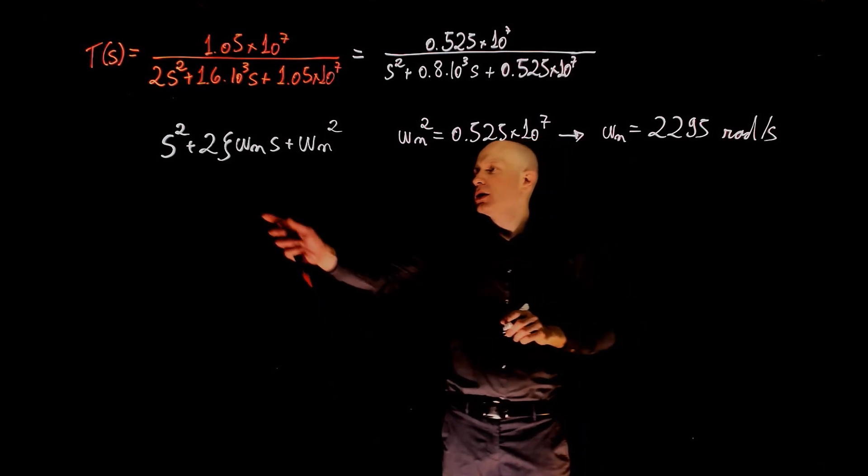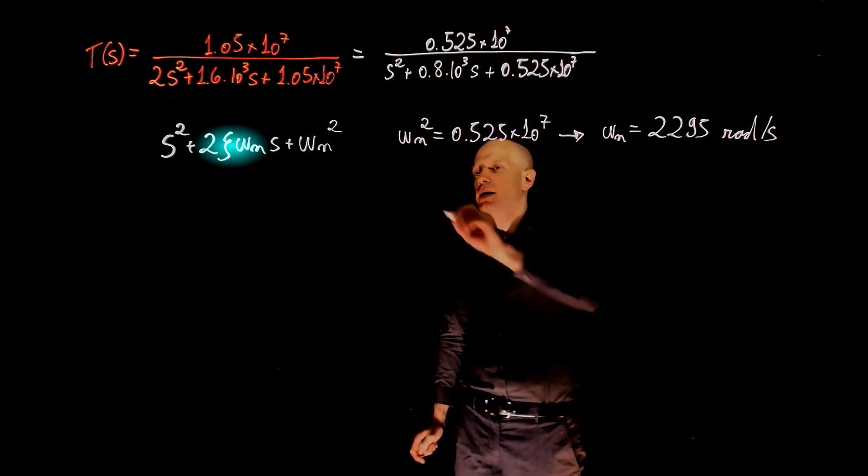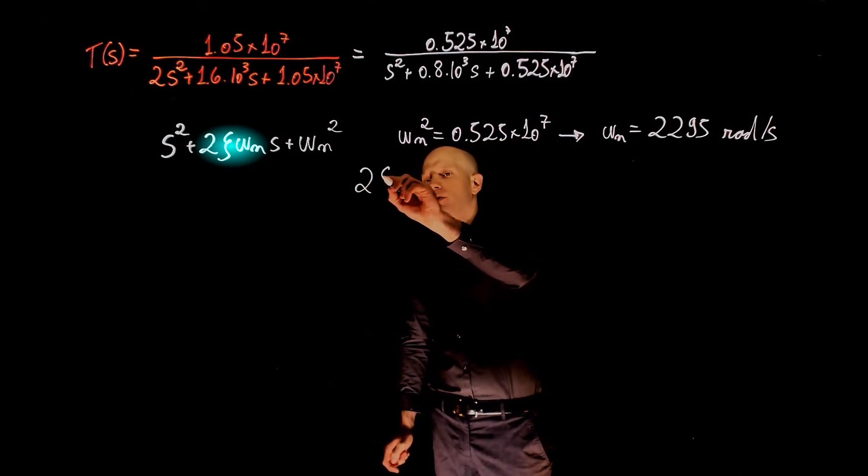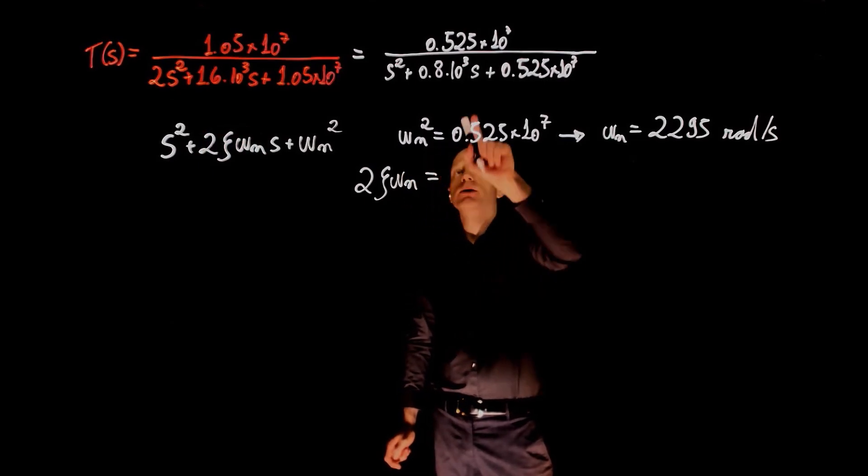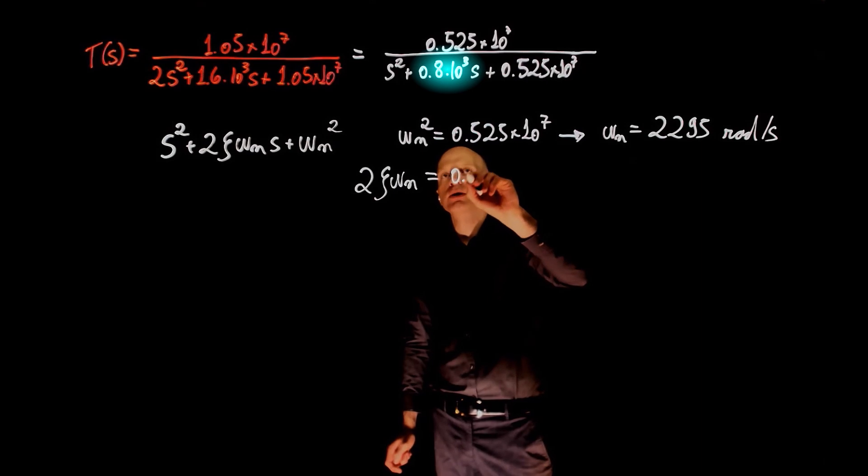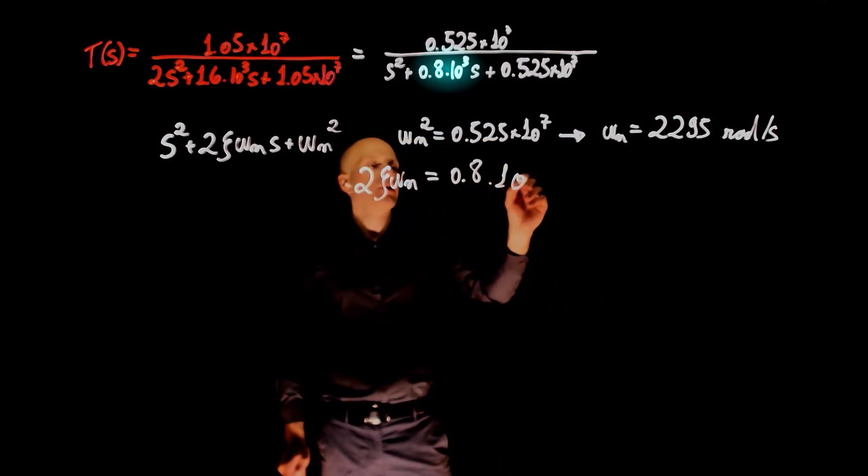To find zeta we can now take the term that multiplies s, so 2 zeta omega n equals the term that multiplies s here, that is 0.8 times 10 to the power of 3.